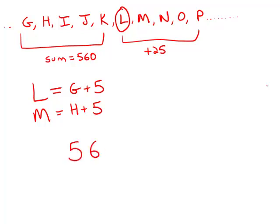Well, the first sum is 560 plus, now we have five numbers, each of which is five more. So, that's an increase of 25, and that adds up to 585. This is answer choice A.